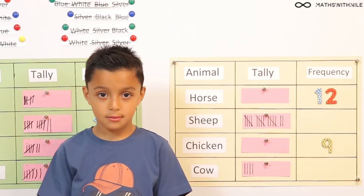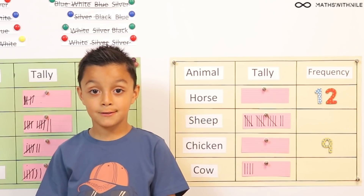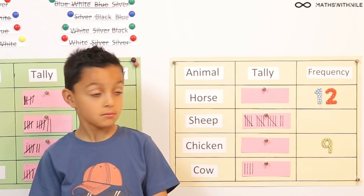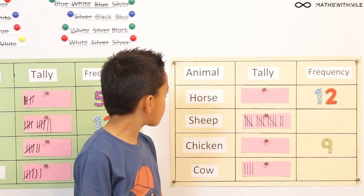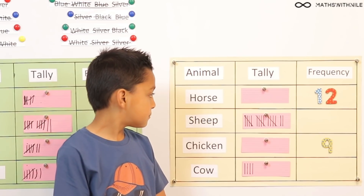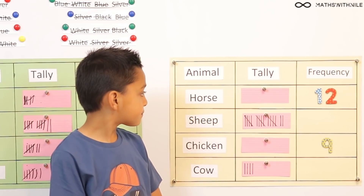So let's stand to the side and let's see. Can you tell me which colour is the most popular? Silver, for sure. Which colour is the least popular? Black. And how many more silver cars were there than blue cars? Twelve minus seven — five more. Very good, Niall. Okay Niall, let's look at your second tally chart. This tally chart was about different animals on a farm.